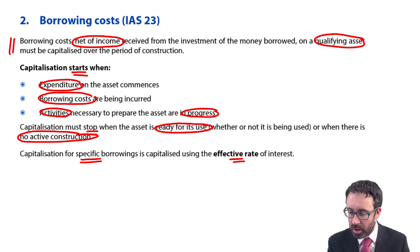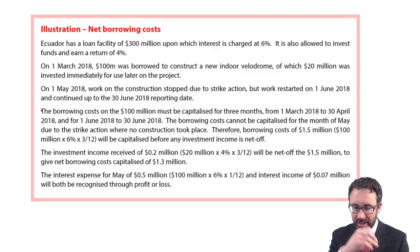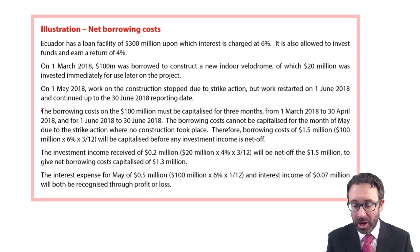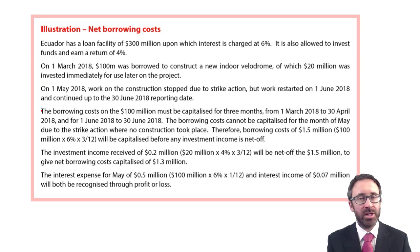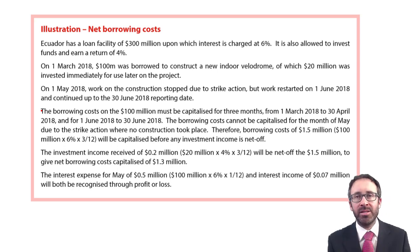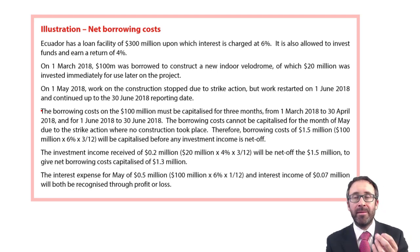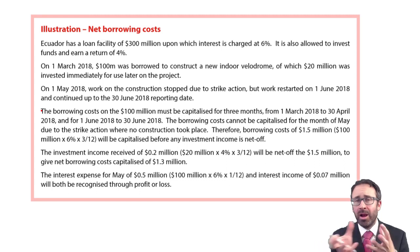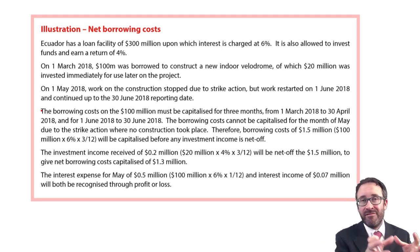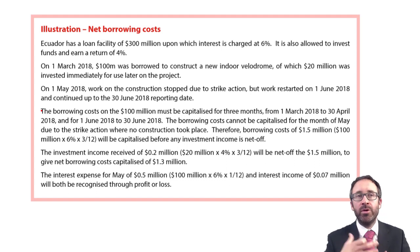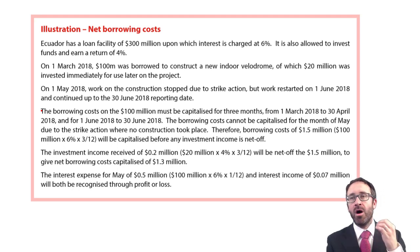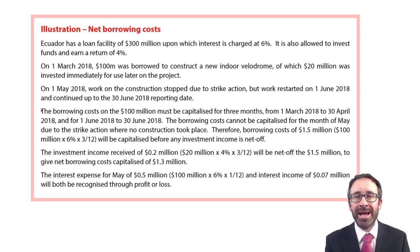Within this scenario, the company has an Ecuador loan facility of 300 million dollars on which interest is charged at six percent. If you use any of that 300 million to construct an asset, you can capitalise it at six percent. However, if the money borrowed is then invested to earn some income and reduce the overall cost of borrowing, you can net that investment income off any interest being capitalised.